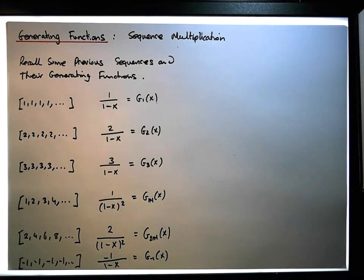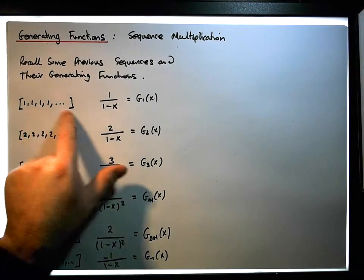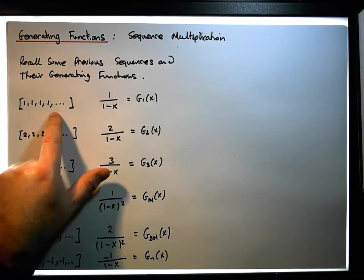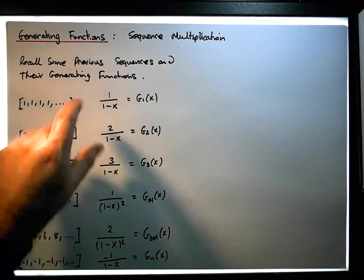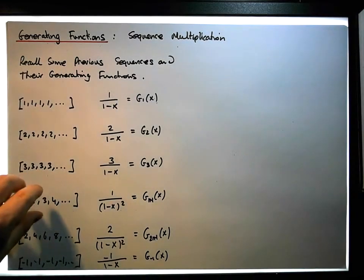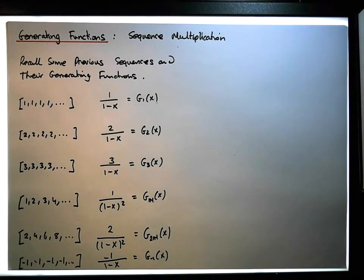What we're going to do now is take something interesting. Let's take the sequence of constant ones and its generating function, and multiply that sequence by the natural numbers, just to see what we get.